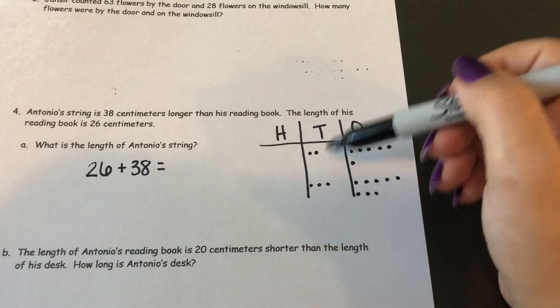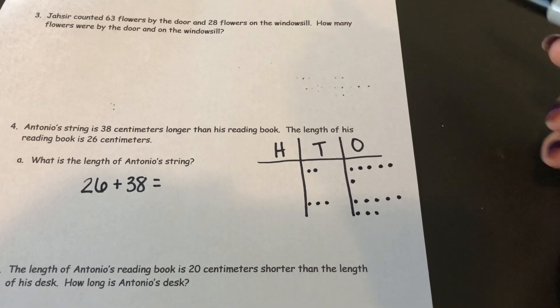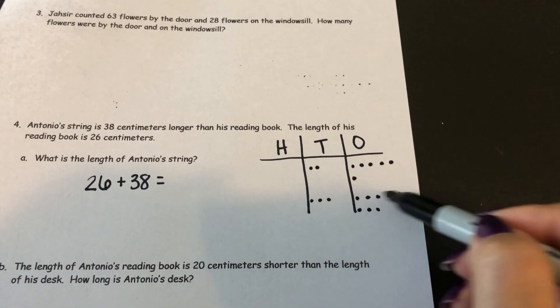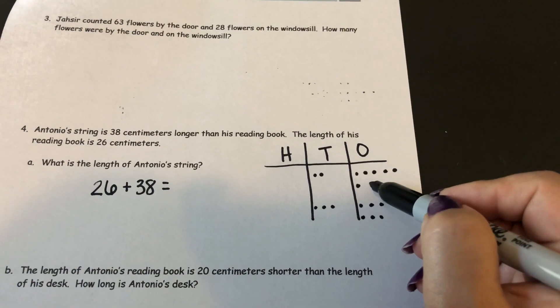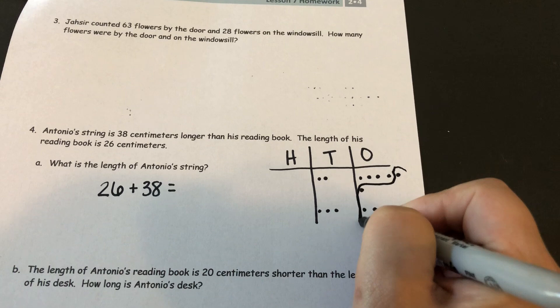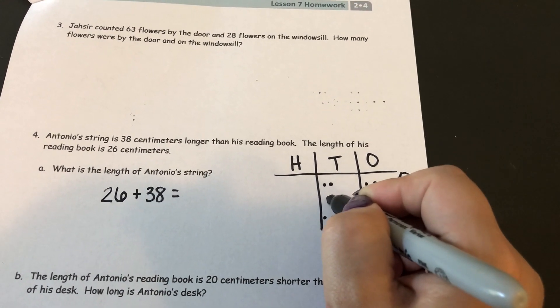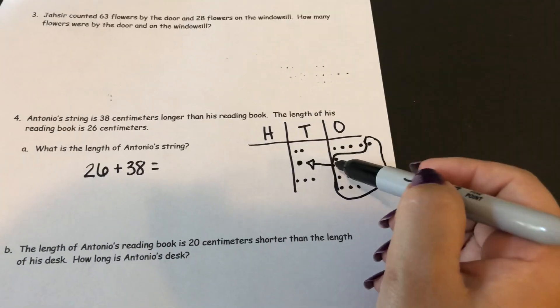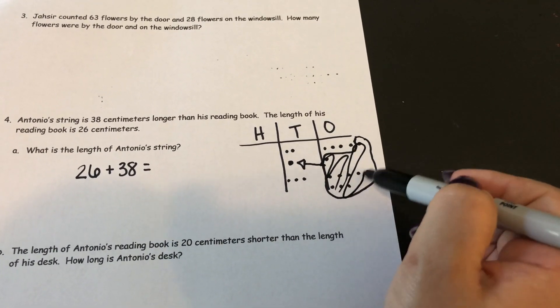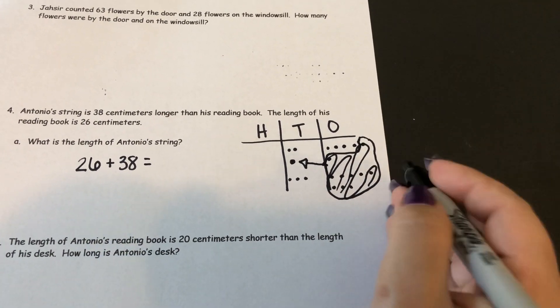I always start in my ones place. I want to see if I can make a bundle of 10 ones. Here is 8, 2 more would make 10. So I'm going to take these 2 ones from here, bundle them together to turn them into a 10. So I no longer have these. But I do have 1, 2, 3, 4 leftover ones.